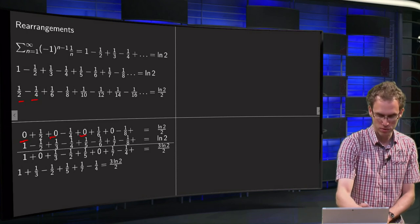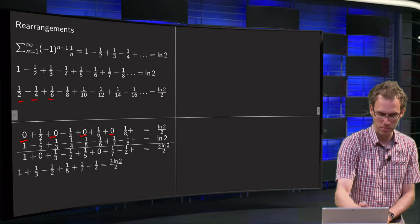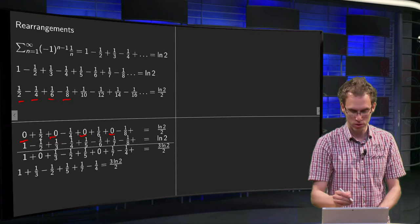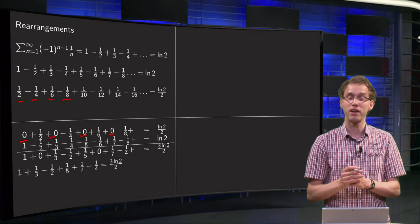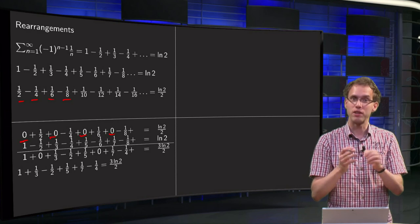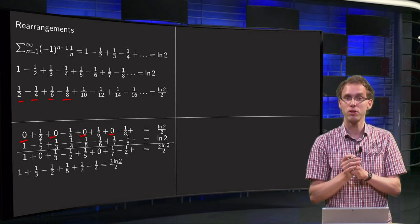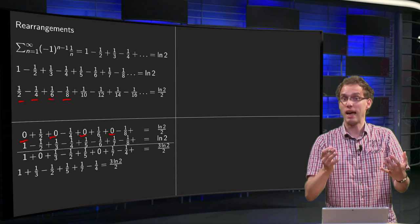Then a +1/6, then again a zero, then a -1/8, and of course that should still be (1/2)ln 2, because I only added zeros, right?